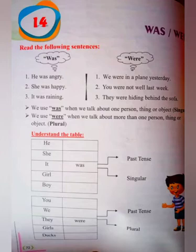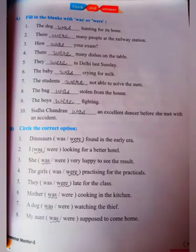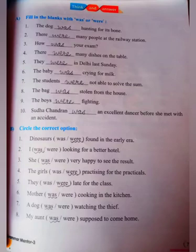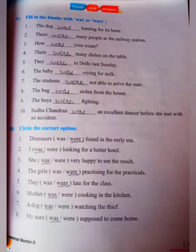Now let's move to the next page, page number 73. Think and answer — fill in the blanks with 'was' or 'were'. Number one: The dog was hunting for its bone. Number three: How was your exam? Number four: There were many dishes on the table.